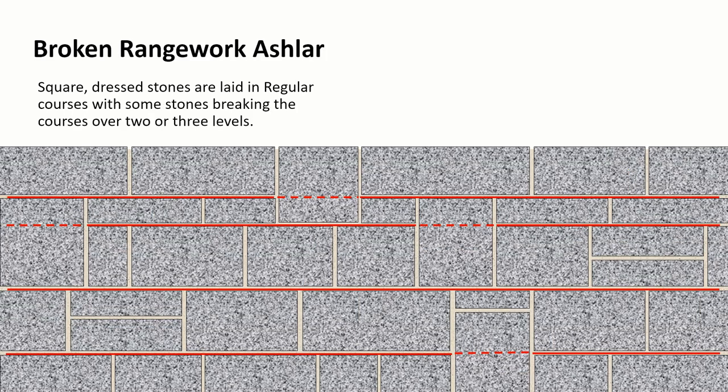Similar to that but following a rough line of a regular course is broken range work ashlar. It has very fine lines, very fine mortar joints but occasionally some of the courses are split so there's two stones per course or sometimes the stones span one or more courses.